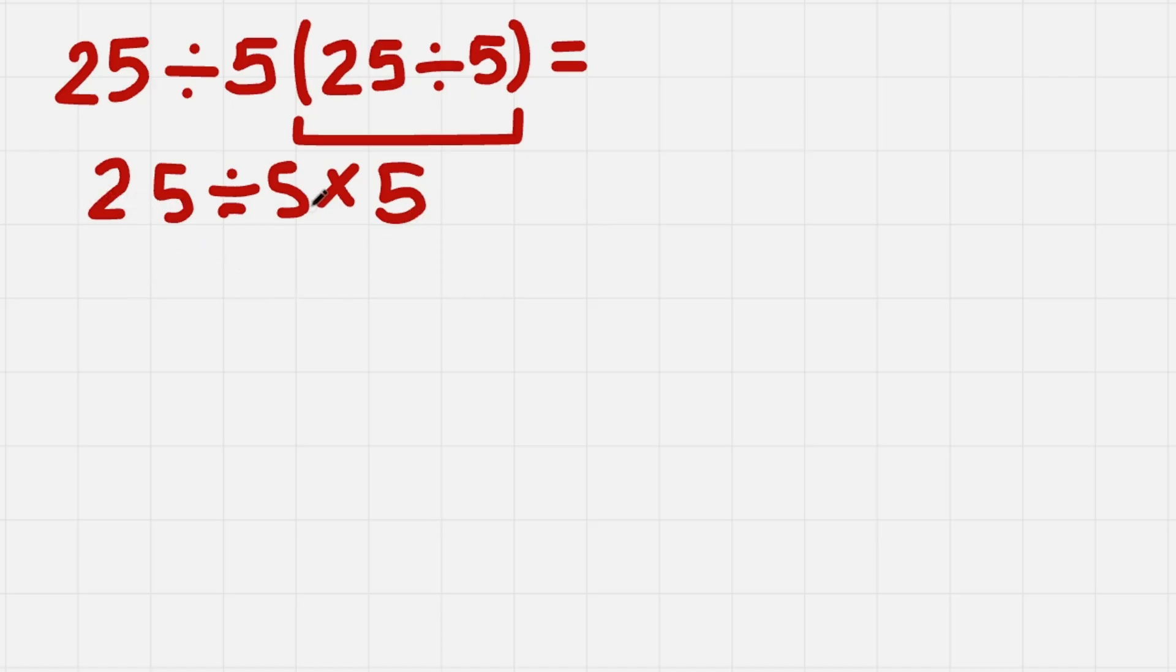25 divided by 5—pretty simple, the same as here—we get 5. And then times 5. 5 times 5 gives us 25 again. And 25 is the final solution and this solution is correct.